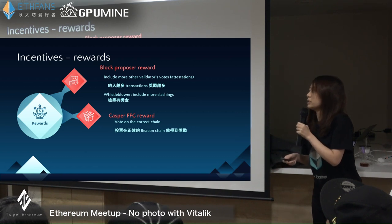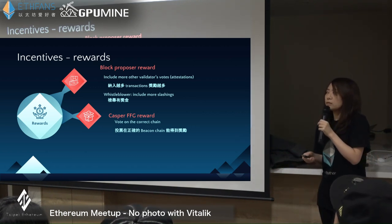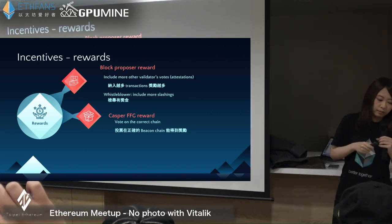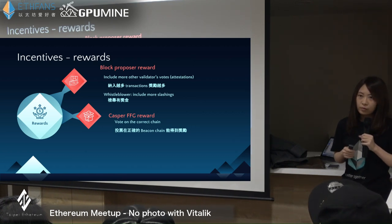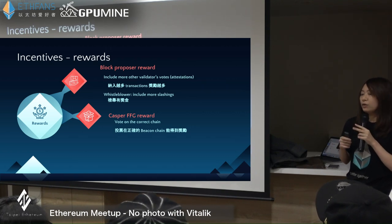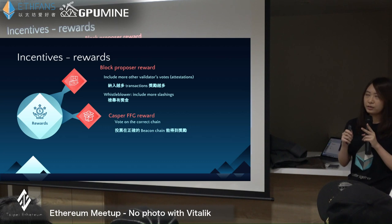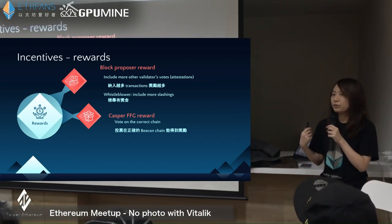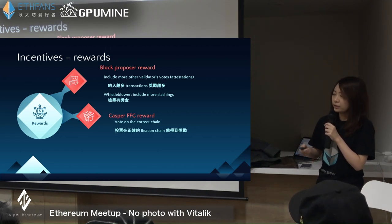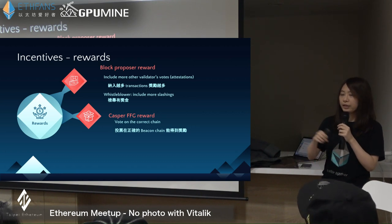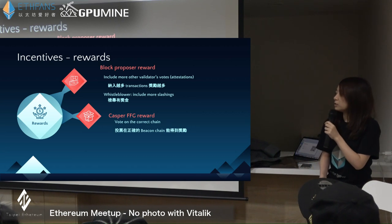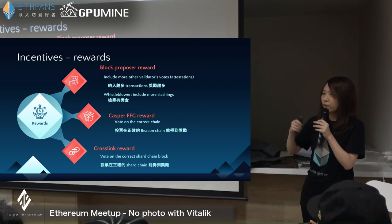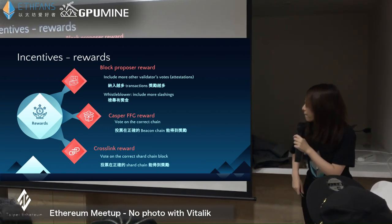Then there are the Casper FFG rewards. The Casper FFG rewards are given for voting on the correct Beacon Chain — by 'correct' I mean the canonical chain. If you are a validator and you see two Beacon Chains that are both valid independently, you need to vote for the one that is more likely to be the canonical chain, the one that will be accepted by the whole network. The last reward is the crosslink reward.